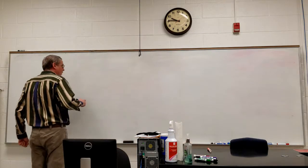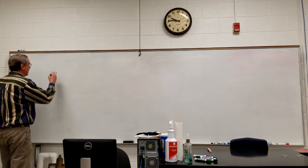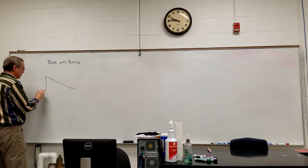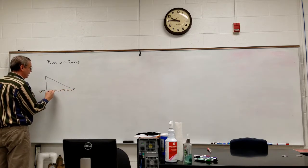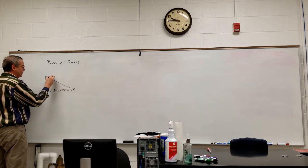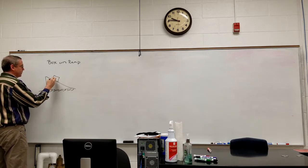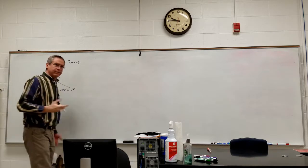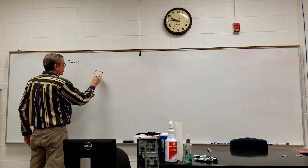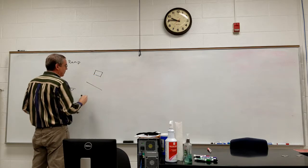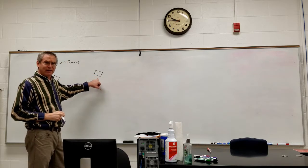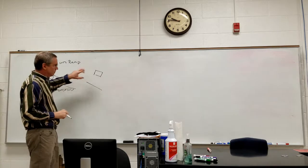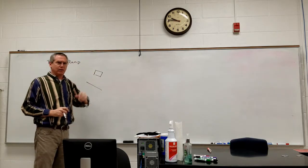The next step is box on ramp. I'm going to make the ramp part of the ground here, so the ramp is fixed to it — we have basically box and ramp. As before, the first thing to do is to separate the drawings. I have the box here and I have the ramp. I recommend drawing the box in the same orientation as it appears, which will make the normal force visually clearer.